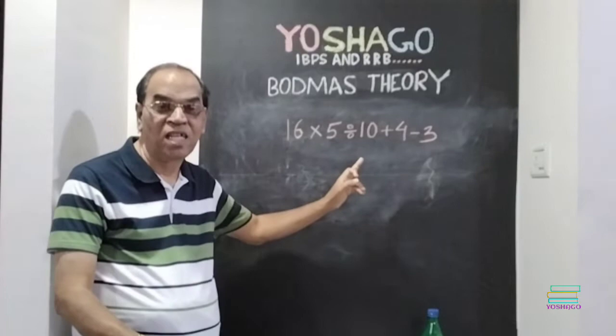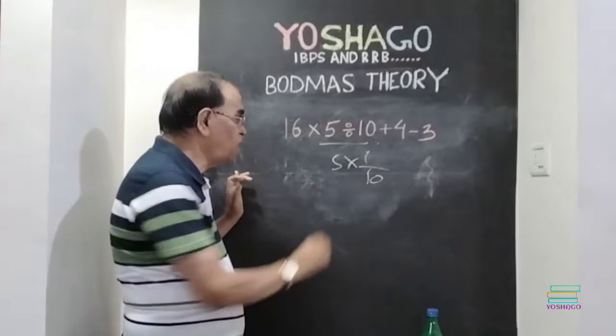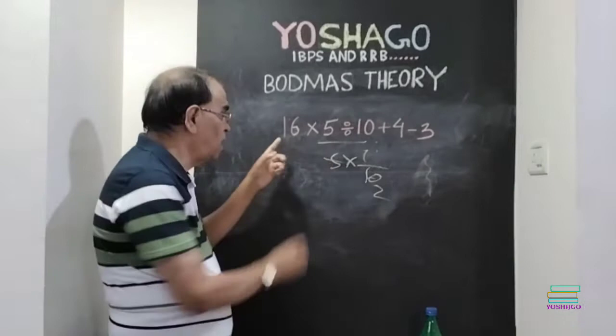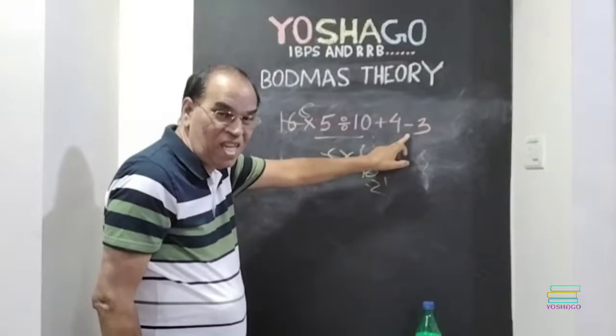5 divided by 10 means 5 into 1 by 10. That means, 5 1 the, 5 2 the. Then, multiplication. Here, 16, 8 to 2, 2 1 the, 2 eta. 8 plus 4, 12. 12 minus 3, 9. Answer is 9.